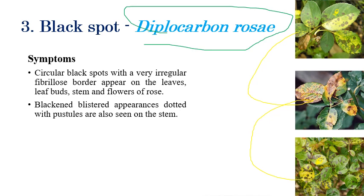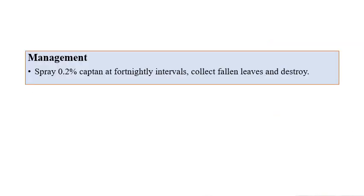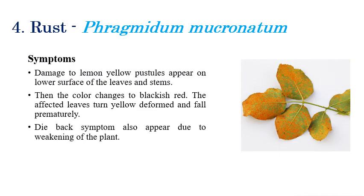For black spot management: spraying of 0.2% Captan at fortnightly intervals, along with collection and destruction of fallen leaves is recommended. Rust is caused by Phragmidium mucronatum. On the lower surface of leaves, orange or red colored pustules can be clearly seen, and the entire plant, especially leaves, gets weakened due to this.